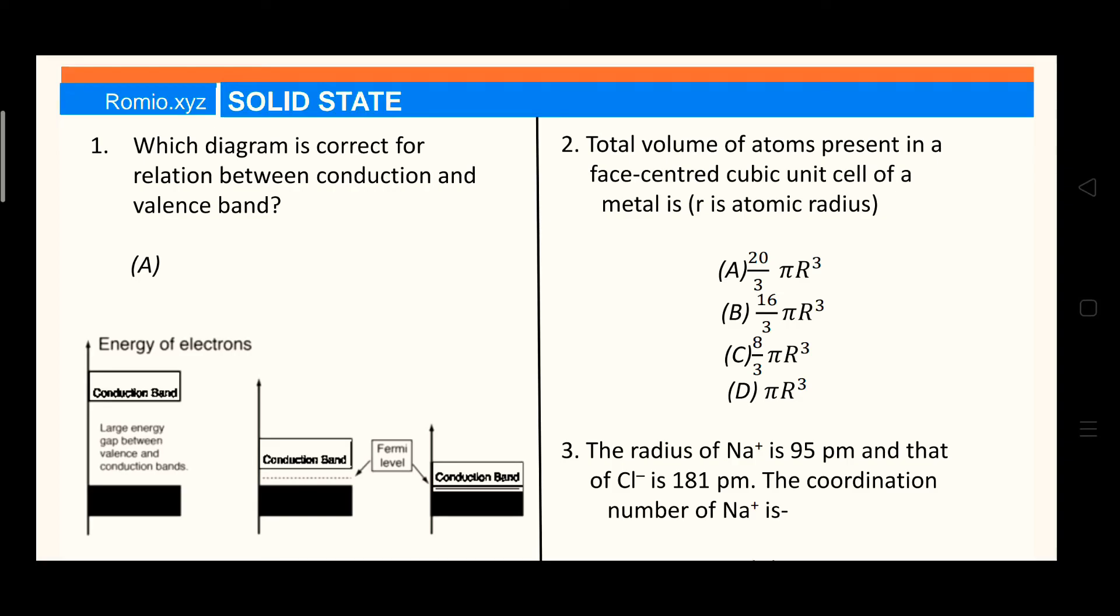Today we are going to start some MCQs based on our physical chemistry topic: solid state. So let's not waste time and start with our MCQs. First question is which diagram is correct for relation between conduction and valence band?